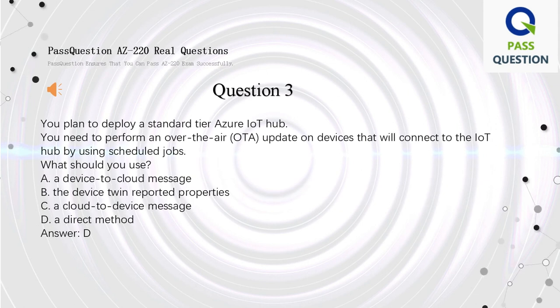Question 3. You plan to deploy a standard-tier Azure IoT Hub. You need to perform an over-the-air (OTA) update on devices that will connect to the IoT Hub by using scheduled jobs. What should you use? A. A device-to-cloud message. B. The device-twin reported properties. C. A cloud-to-device message. D. A direct method. Answer: D.